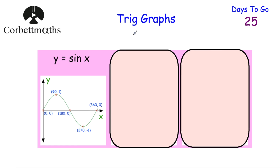Today we're going to be looking at our graphs of trigonometric functions, or our trig graphs. We've looked at trigonometry already, working out the sines, cosines, and tans of various angles. Now let's look at their graphs. So if we've got the graph y equals sine x: the sine of zero is zero, the sine of 90 degrees is one, the sine of 180 degrees is zero, the sine of 270 degrees is negative one, and the sine of 360 degrees is zero. So it has this wave shape — that's the graph of y equals sine x.